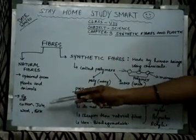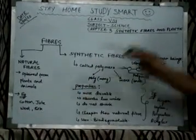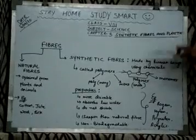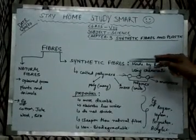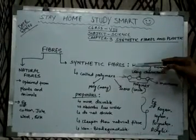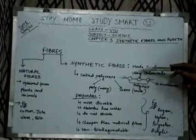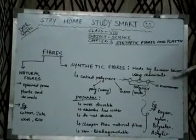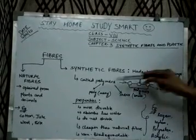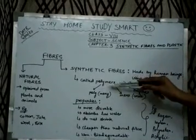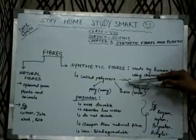Natural fibers come from plants and animals, like cotton, jute, wool, and silk. But in this chapter we will study about synthetic fibers. So what is a synthetic fiber? Synthetic fibers are made by human beings using chemicals, and these are called polymers.